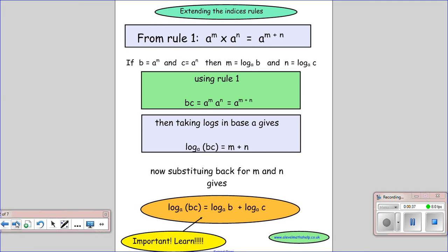So we're going to start off by looking at the first rule, and this is an extension of the indices rule. So we have a to the power of m times a to the power of n. The answer is a to the power of m plus n. So we multiply here, we add up there. So first of all, we're going to start by defining b as equaling a to the m and c as equaling a to the n.